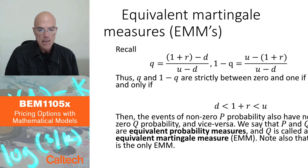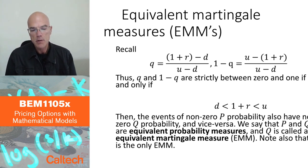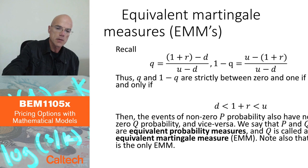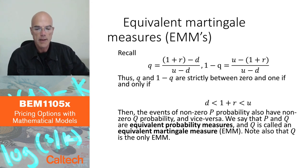We already found in our binomial single period model how probabilities look that make discounted stock a martingale. We have these formulas for our q and 1 minus q for the up move and down move to make the discounted stock a martingale.